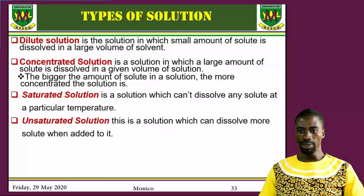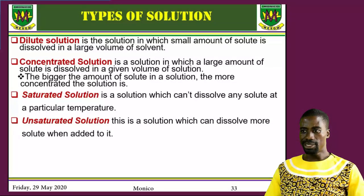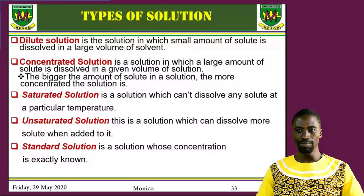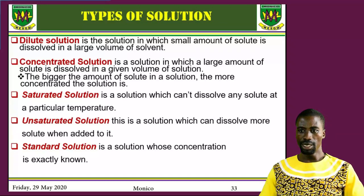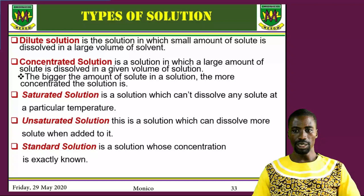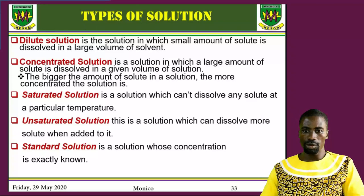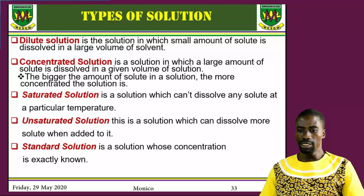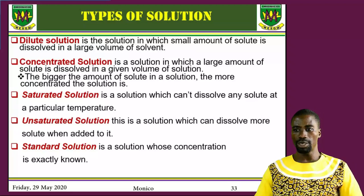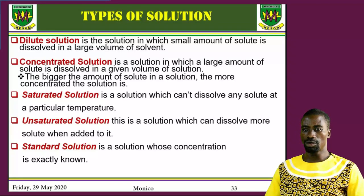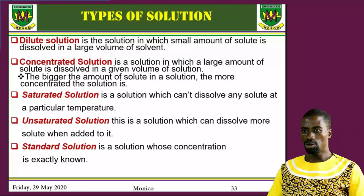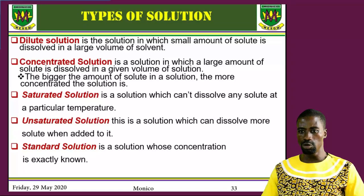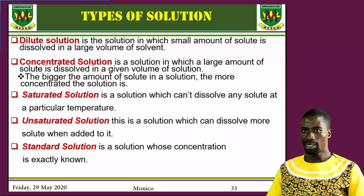A standard solution is a solution whose concentration can be known exactly. When you are calculating for mass, you may round off decimal places, so your concentration is known but not exact. For a standard solution, you can have the concentration exactly known.